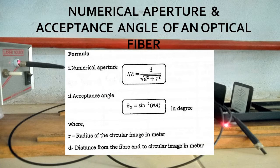Formula: Numerical aperture NA equals d divided by root of (d squared plus r squared). Acceptance angle theta equals sine inverse of numerical aperture, where r is the radius of the circular image in meters and d is the distance from the fiber end to the circular image in meters.